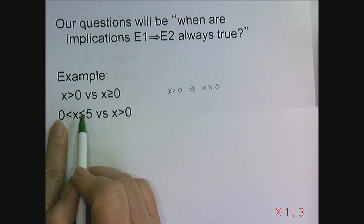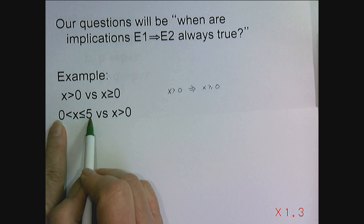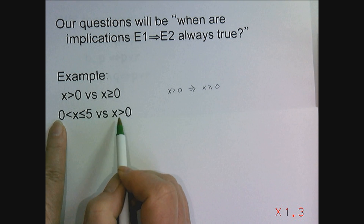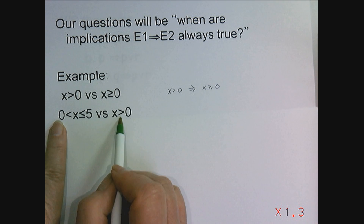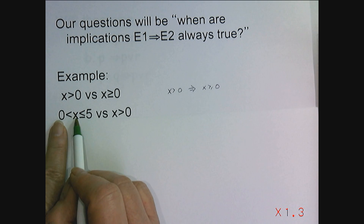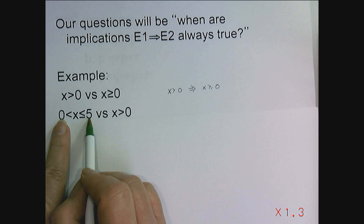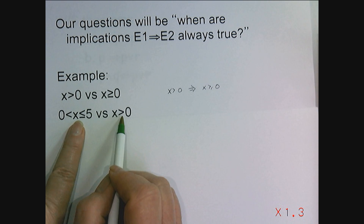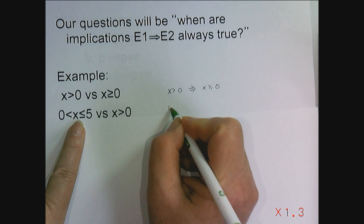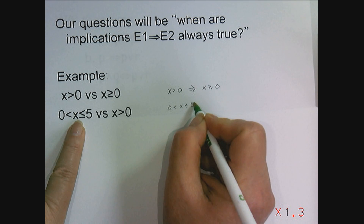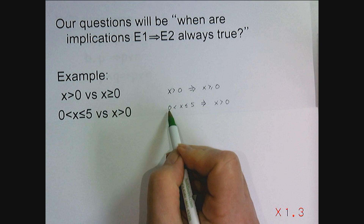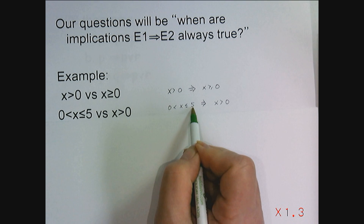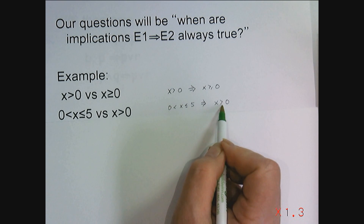In this particular case, if we wanted to compare x being between zero and five, not including zero but including five, versus x being greater than zero — six doesn't make the first true, but it does the second. Anytime we pick a number between zero and five, if it makes the first expression true, it's going to be the case that the value is greater than zero. So zero less than x less than or equal to five implies that x is greater than zero, which means that zero less than x less than or equal to five is stronger than x being greater than zero.